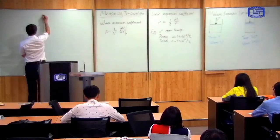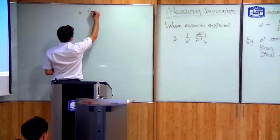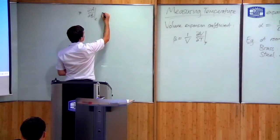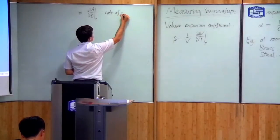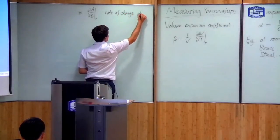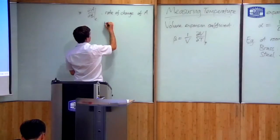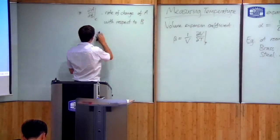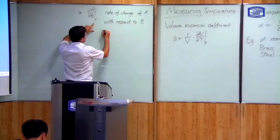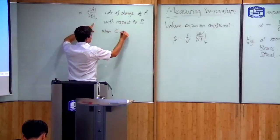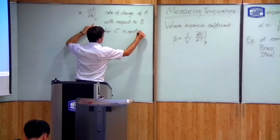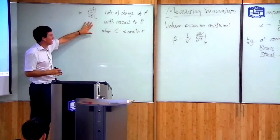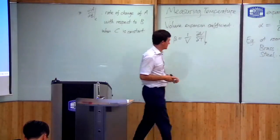So if you're not used to that notation, I'll just note: dA by dB at constant C means the rate of change of A with respect to B when C is held constant. We will see quite a lot of notation like this in this class, so it's good to make sure you understand it.